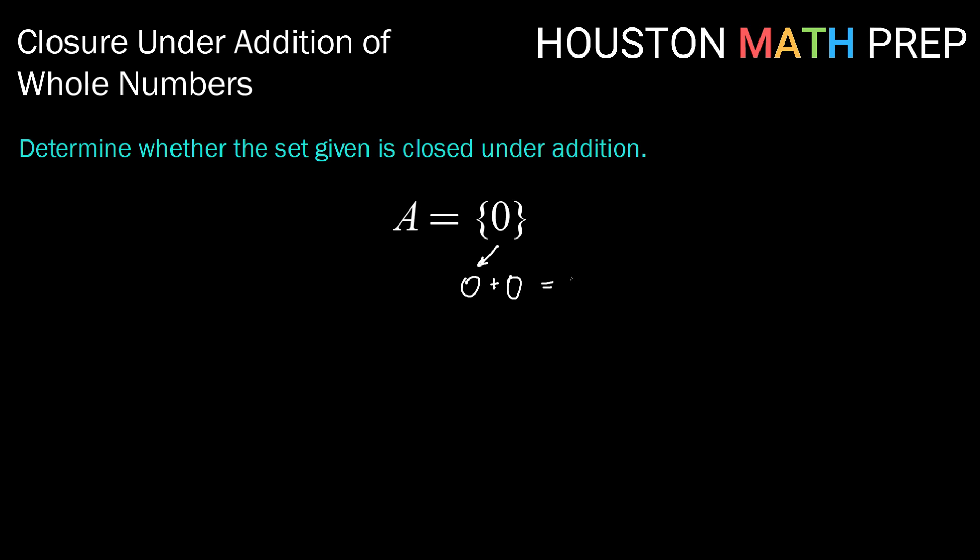What is the result? First of all, it's zero. Is that number also in the set? In this case, yes. So this set A is closed because all of the possible operations or all of the possible additions with values in this set land you right back in the set.